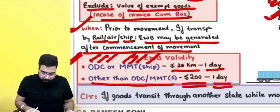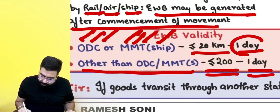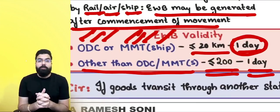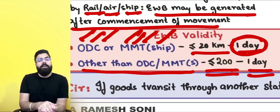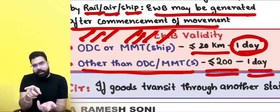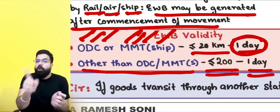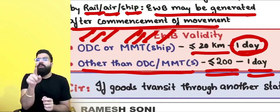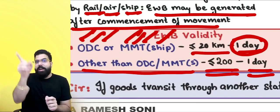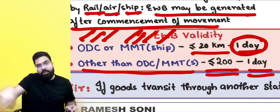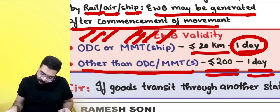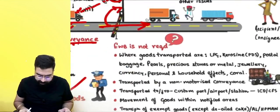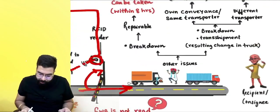When calculating validity, one day for an e-way bill means from midnight 12 to the next midnight 12 — not from the time of generation to the same time next day. Always remember: validity is calculated as midnight to midnight.